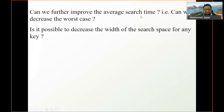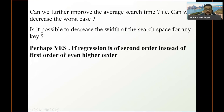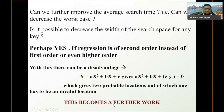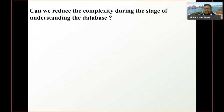Can we further improve the average search time and decrease the worst case? It is possible if we use a second-order or higher-order regression instead of linear. However, solving a quadratic equation y = ax² + bx + c yields two roots, meaning two probable locations — one of which is invalid. Determining which root is valid adds extra complexity, so higher-order regression introduces its own disadvantages.